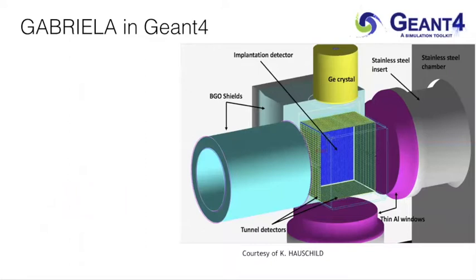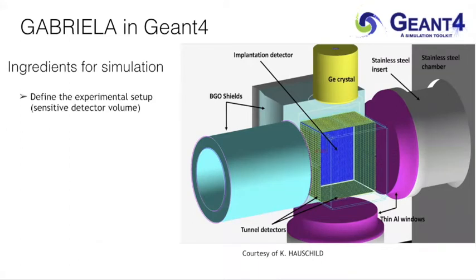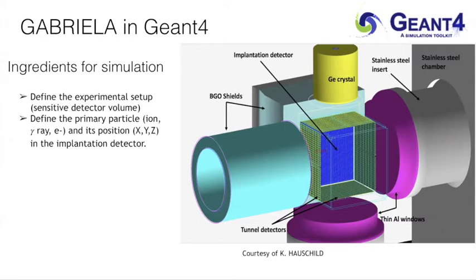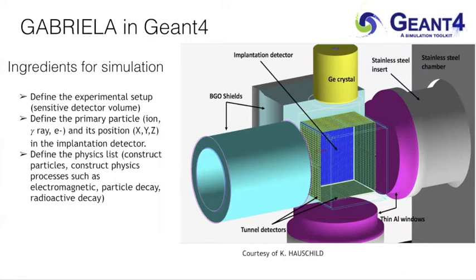The GABRIELA setup detectors need to be characterized, and this was done using GEANT4. The basic ingredients required to perform simulations in GEANT4 are: first, define the experimental setup including sensitive volumes and detector geometry. A detailed 3D geometry of the setup was built by my co-supervisor Carl. After defining the geometry, one defines the primary particles, their type, energy, and position inside the implantation detector, and then defines the physics list, which constructs the particles and processes including electromagnetic processes, particle decay, and radioactive decay.